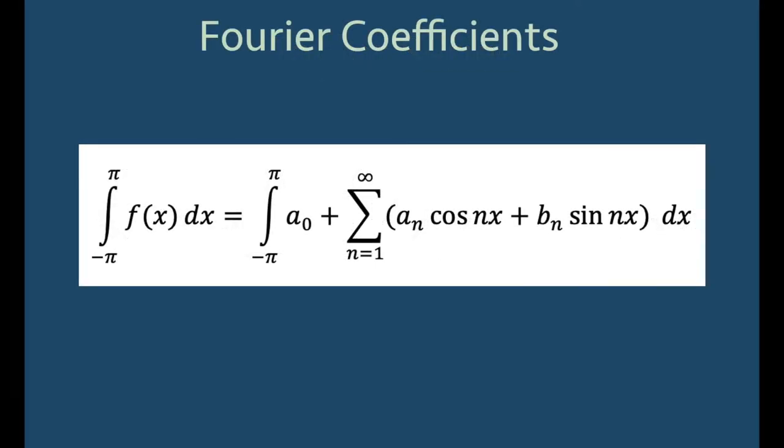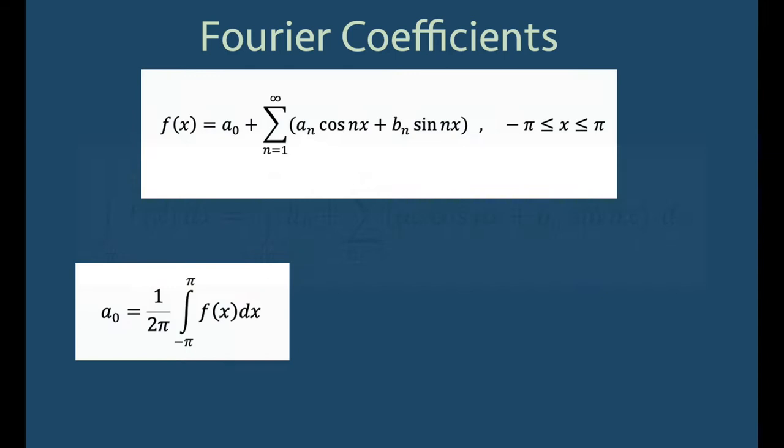First, we can find a0 by simply integrating both sides of our equation for f(x) over the interval from negative pi to pi, and we get a0 = 1/(2π) times the integral from negative pi to pi of f(x) dx.